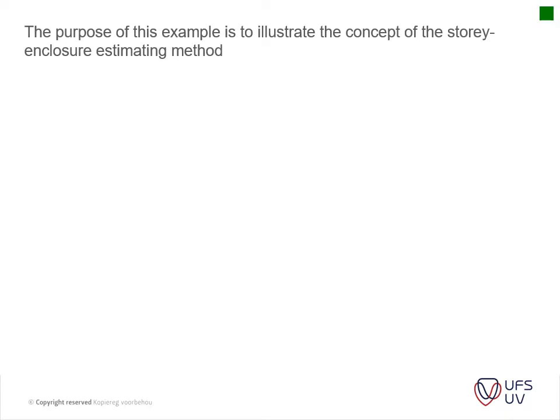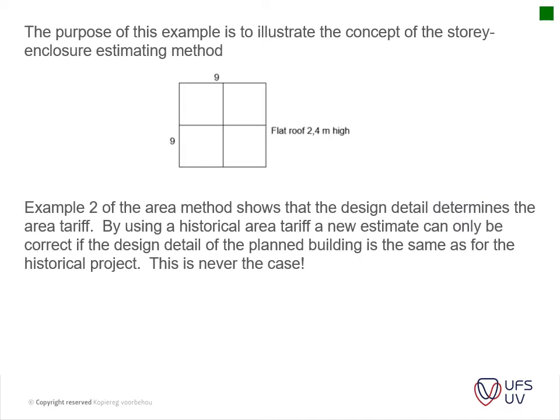The purpose of this example is to illustrate the concept of the story enclosure method. Looking at our building, as you can see it has been designed — it is a square rectangular building, 9 by 9 meters on plan, with an elevation of 2.4 meters.